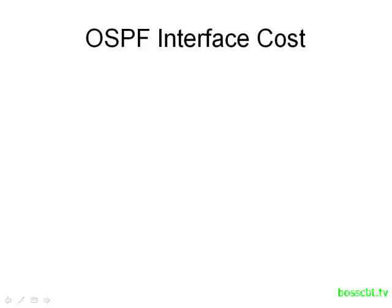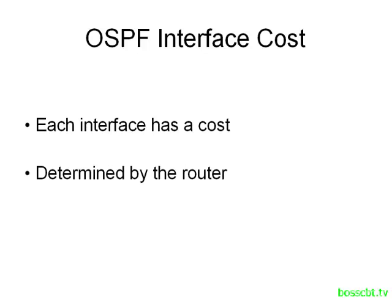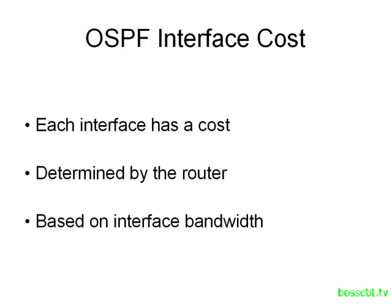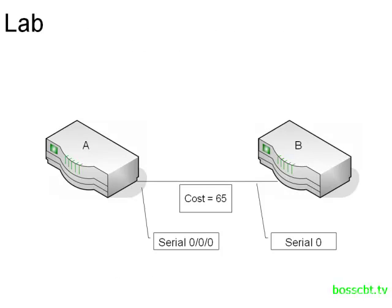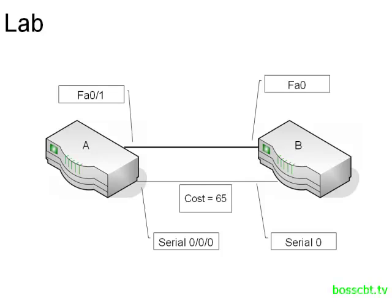Let's start with the OSPF cost approach. Each interface has an OSPF cost determined automatically by the router, based on the bandwidth of that particular interface. If we want to change this, the command we use is 'IP OSPF cost.' In our lab, we have a single serial interface between two routers — let's say a T1. The automatic OSPF cost is 65. Then we provision a second link, a Fast Ethernet link with considerably more bandwidth, and the cost there by default in OSPF would be 1.